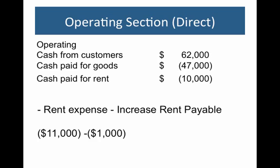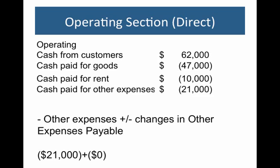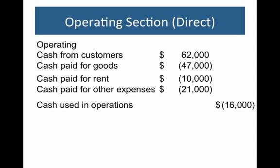Next is rent expense, which was $11,000. But rent payable went up, meaning we didn't pay all of it — there's $1,000 we didn't pay — so the net effect is a $10,000 payment of rent. Then our other expenses were $21,000 and there are no associated accrual items like other payables, so there are no other adjustments — that's a pure outflow of cash. We add all those up, and as expected it equals exactly what we came up with using the indirect method. So you've seen two ways to get to the same thing: the cash used in operations. The indirect method starts with net income, adds back non-cash items, and looks at changes in working capital. The direct method goes line by line on the income statement and ties those to the working capital accounts, giving you the same result.